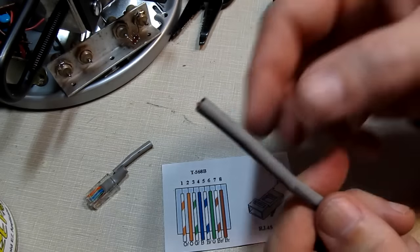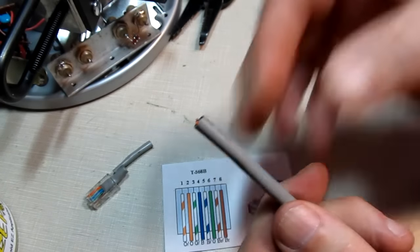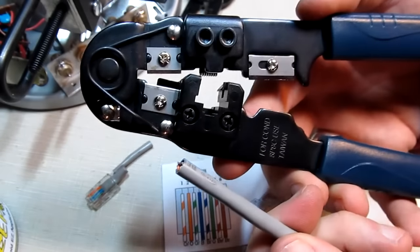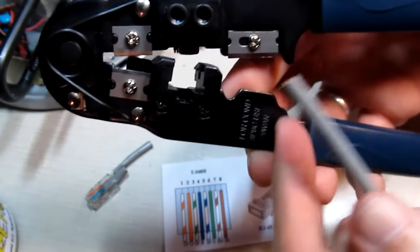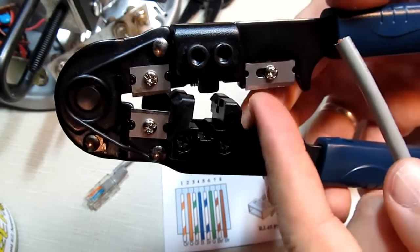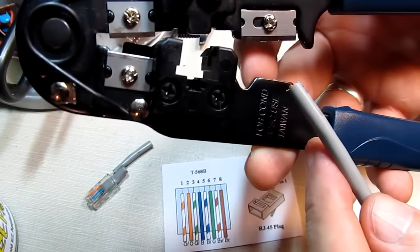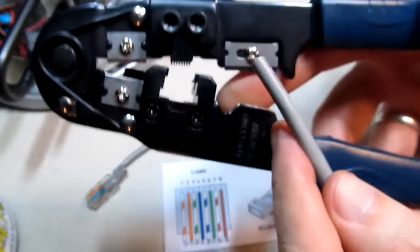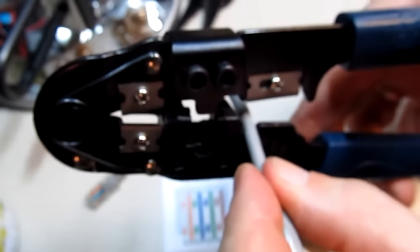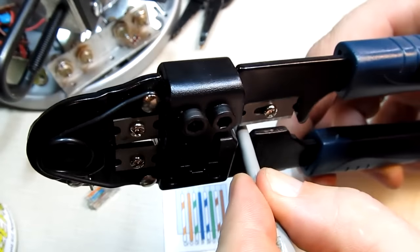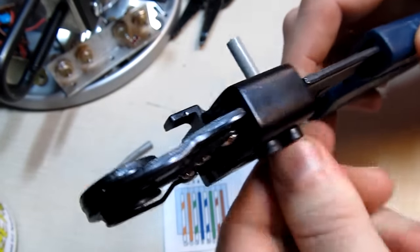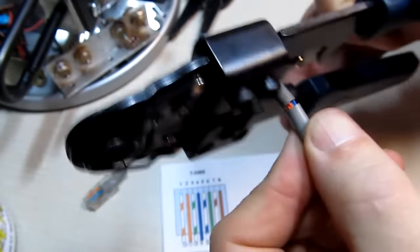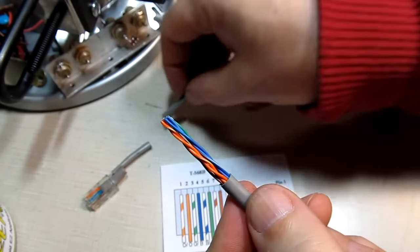Okay, so the tool we'll use to strip the outer jacket off here is the same tool that is used to attach the connector itself. There's a number of different features on here, a flat cutter and this cutting feature right here with the slot, and what that allows you to do is put the wire in there and close down on this, and just by rotating the wire around it cuts through the outer jacket and you can easily slide that off.